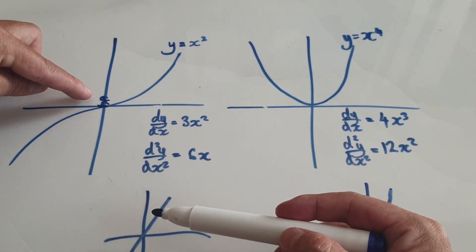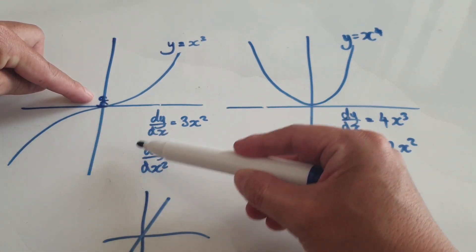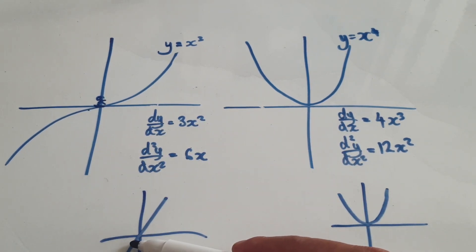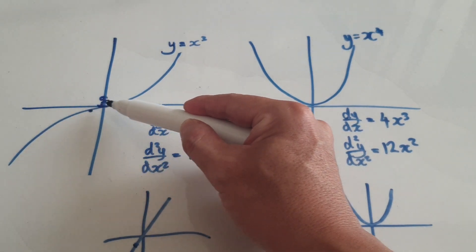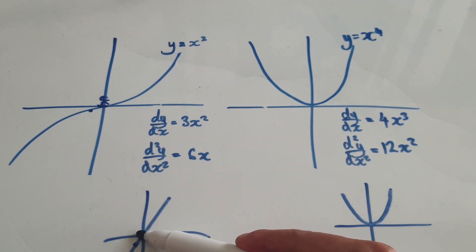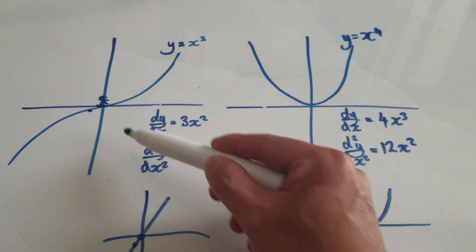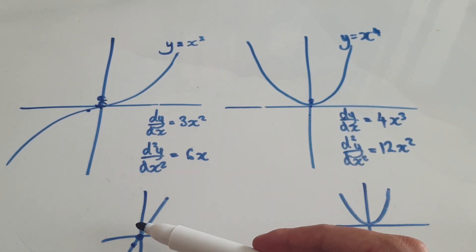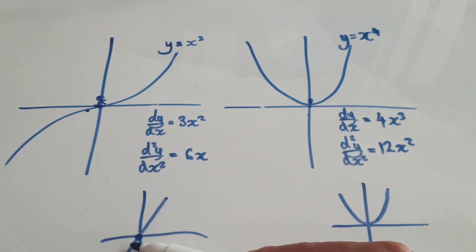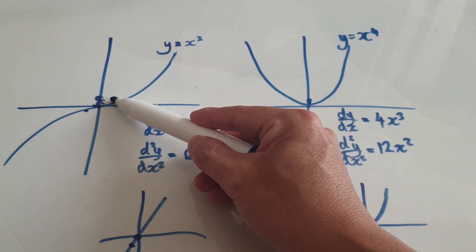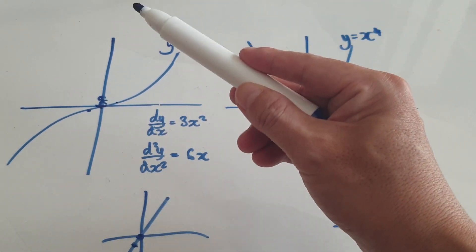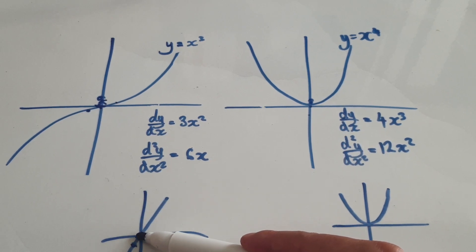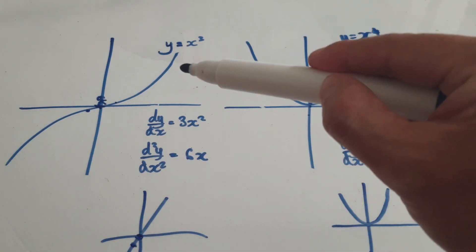An inflection point exists when concave down meets concave up. So if you're standing just to the left, the concavity is negative, meaning it's concaving down. And then dead on the origin, the concavity is zero — dead on x equals zero. But the difference here is that here it's concaving down, that's why it's on the negative side, and here it's concaving up. An inflection point exists when the negative concavity meets the positive concavity and it's dead on zero at the point that you're investigating.